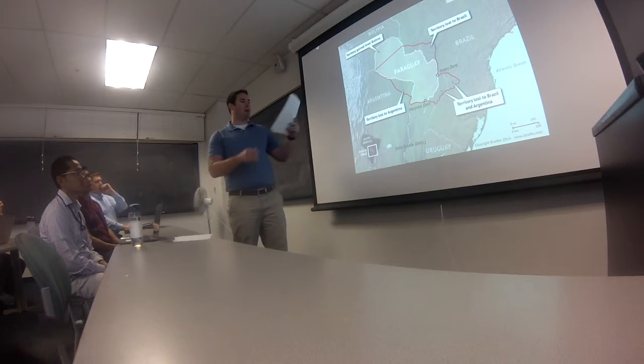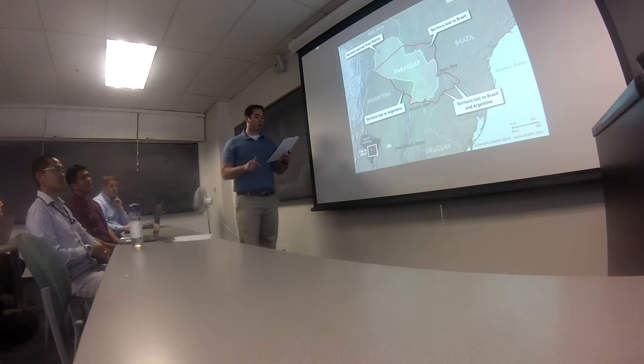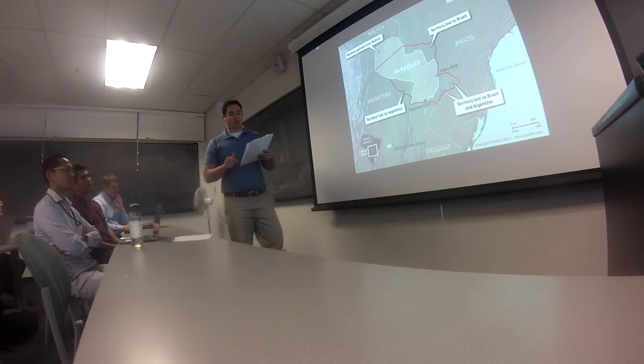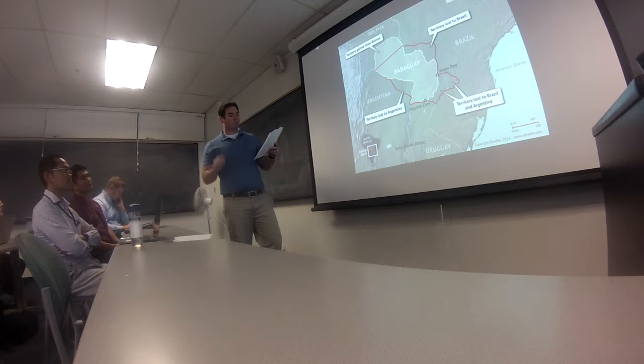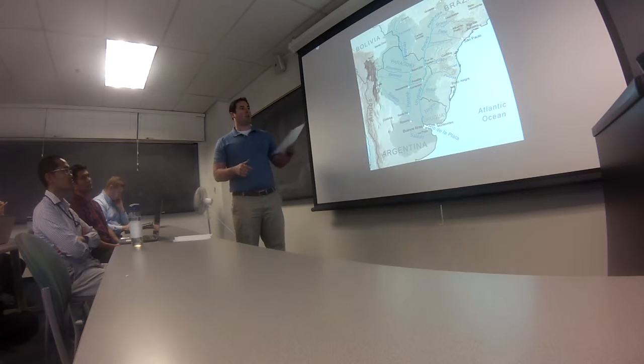So take a look at this map right here. Fast forward around 400 years you can see the red outlined area of the borders of old Paraguay prior to the Triple Alliance War of 1863. It's much different now and pay attention to this because I'll come back to it later on how the borders changed.